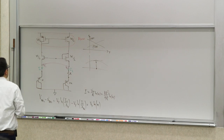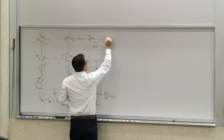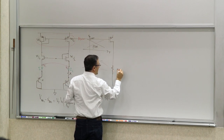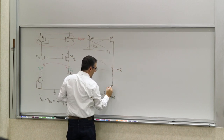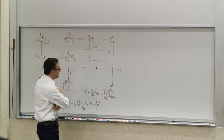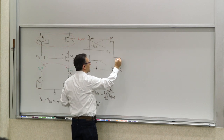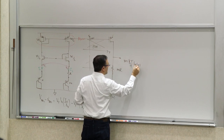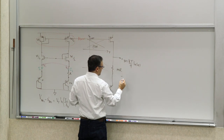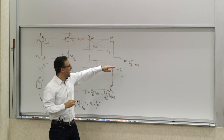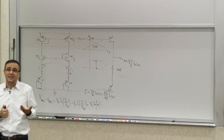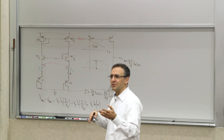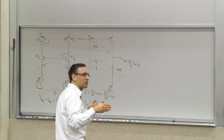The way we achieved this was by taking the PTAT current, feeding it through another resistor M·R, then putting it in series with another VBE. This voltage is M·(KT/Q)·ln(N) plus VBE. You get PTAT in series with CTAT, and this comes close to the bandgap voltage of silicon — approximately 1.05 to 1.1 volts — which is nice if you're trying to create a constant voltage.